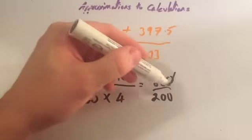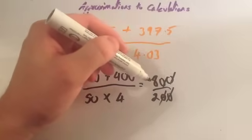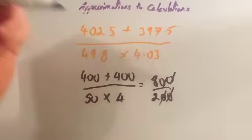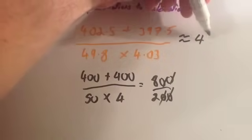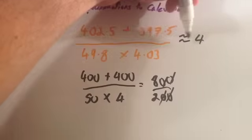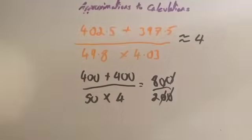Alternatively, remember, you can cancel the zeros like that and do 8 divided by 2, which is 4. So, when we approximate this sum, the answer is approximately equal to 4. And remember, use your squiggly equal signs, your approximately equal signs.